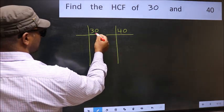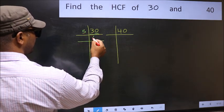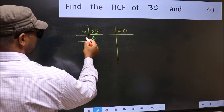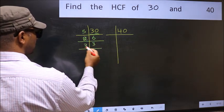Here the last digit is 0 so take 5. When do we get 30 in 5 table? 5, 6, 30. Now 6 is 2, 3, 6. 3 is the prime number so 3, 1 is 3.